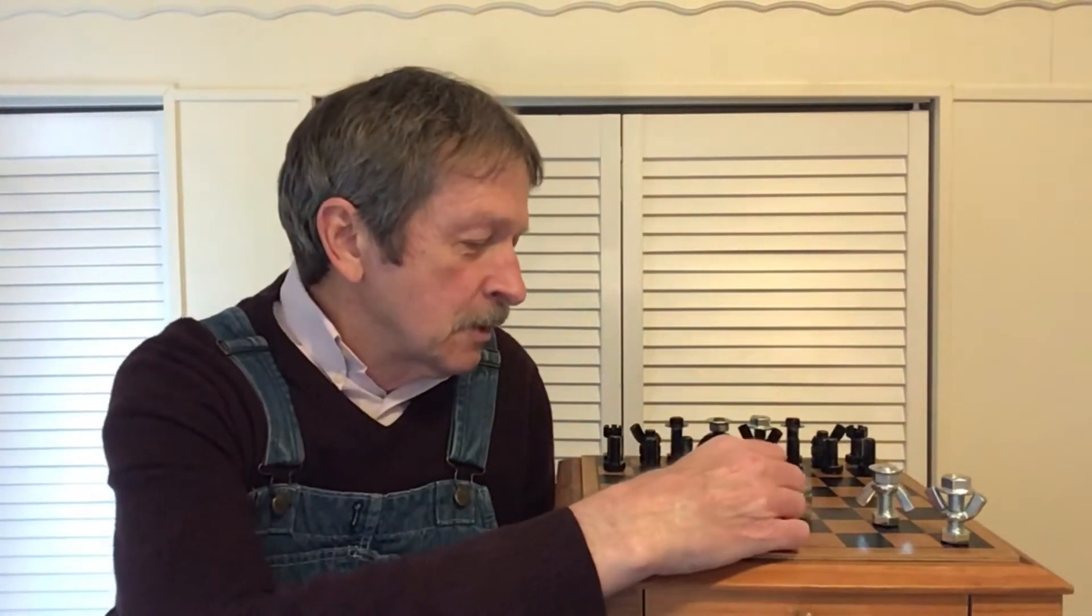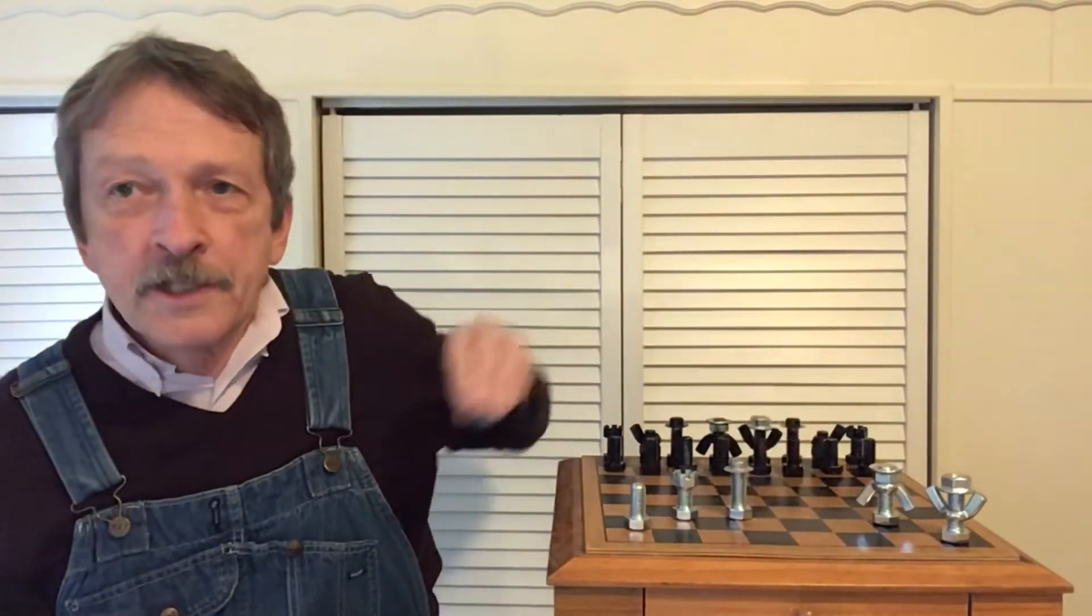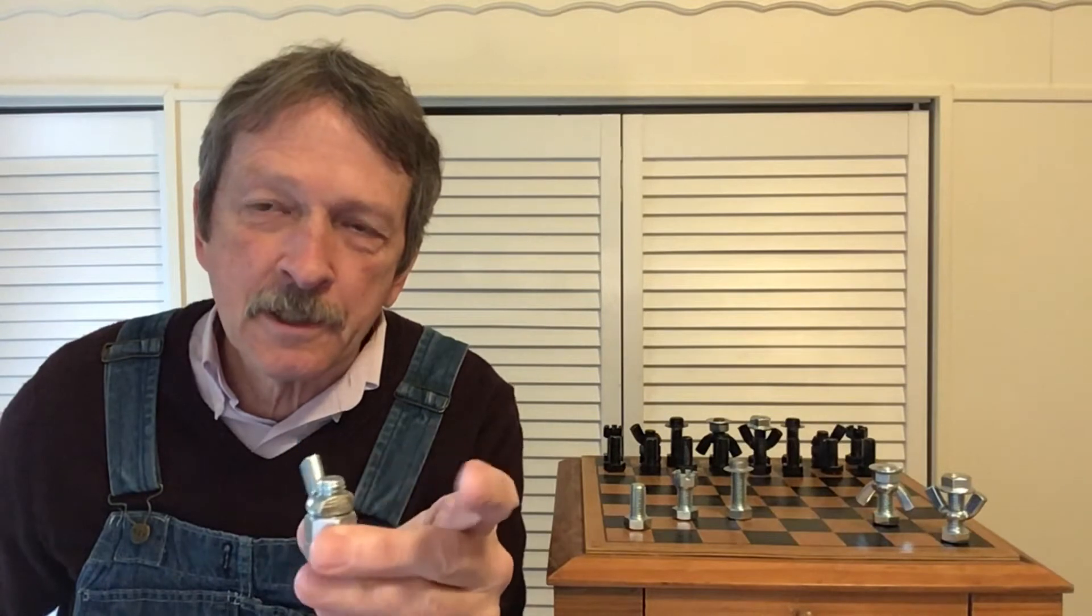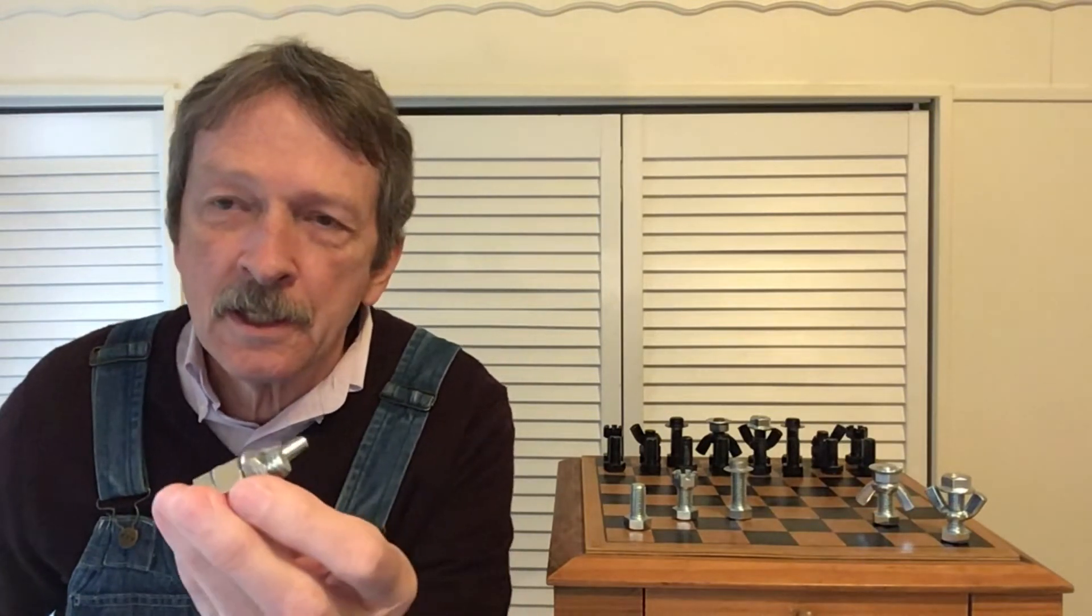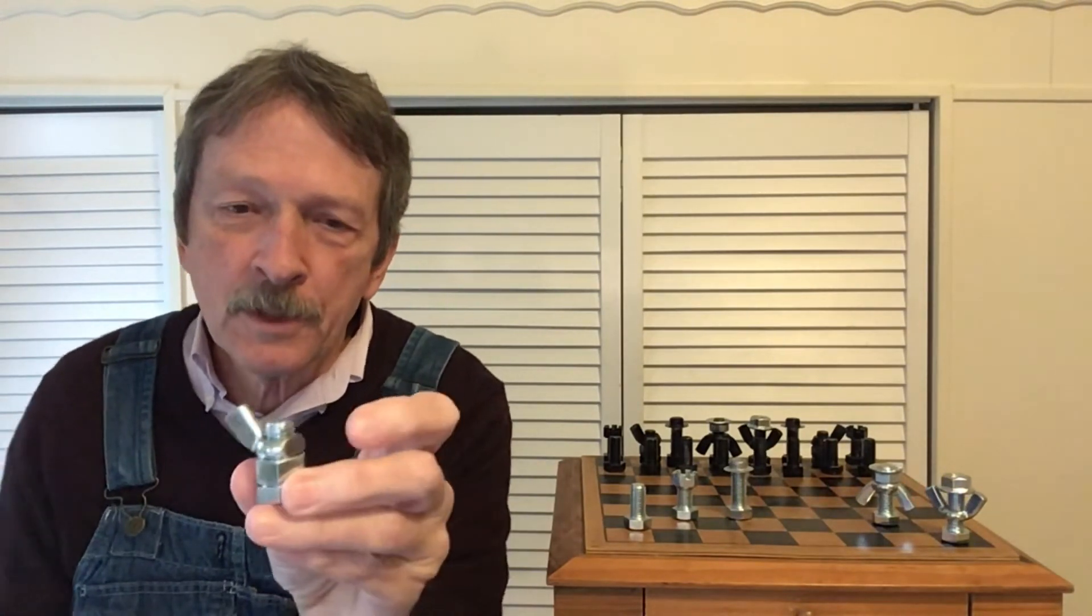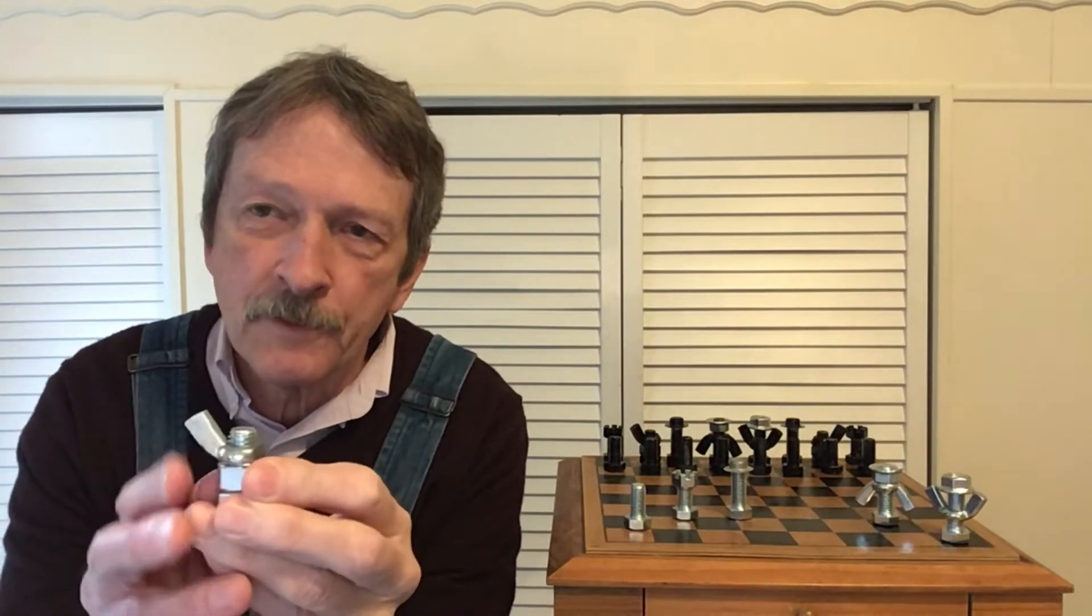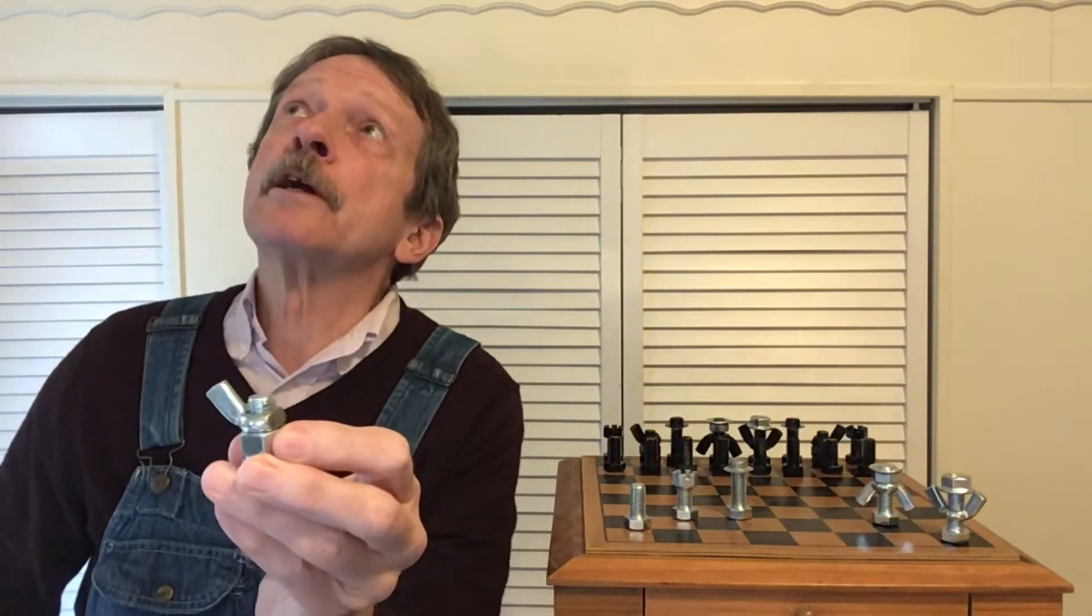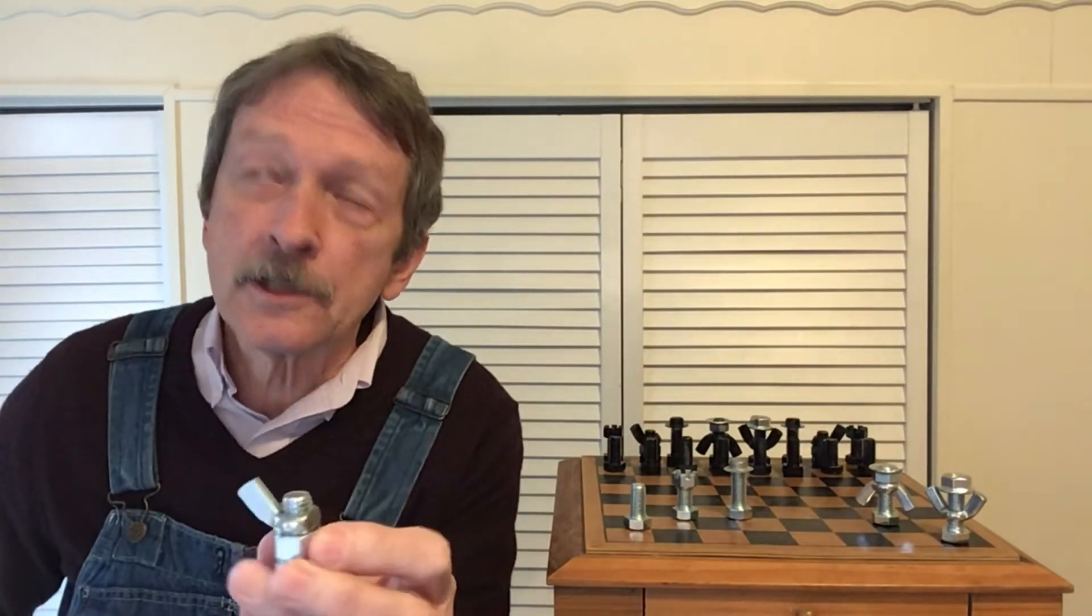So and then the next one we have is what I like to call my horsey. All right. I know it's not a horsey. It's a knight. See what I've done here is we've got the hex bolt. That's an inch tall. And then I used a wing nut for the top to form his head. And it looks like he's looking up in the air expecting something. Expecting to win probably.